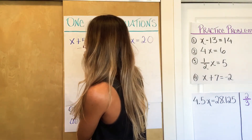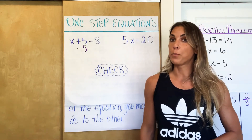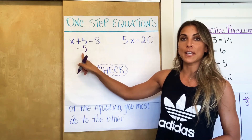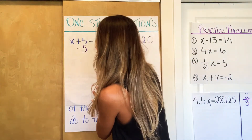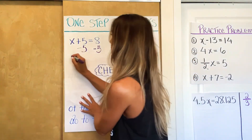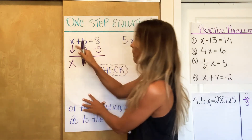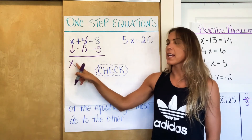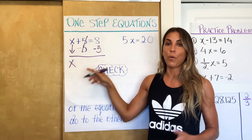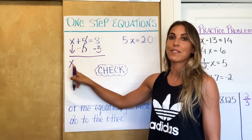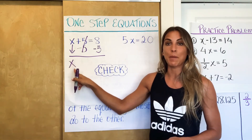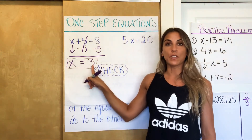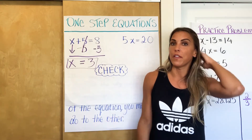The inverse operation of adding is subtracting, so we're going to subtract five — writing minus five right underneath that plus five. But remember the second rule: whatever you do to one side, you do to the other. So we also subtract five from the right side — from the eight. Now X comes down, and five minus five is zero, so it cancels out. X plus zero is just X, which was our goal: isolate X. The equal sign comes down, eight minus five is three, and there's our solution: X equals three.